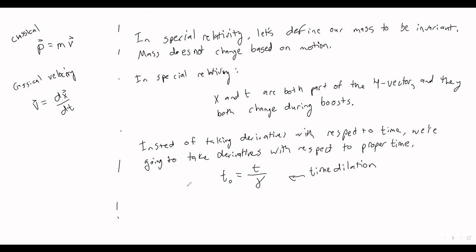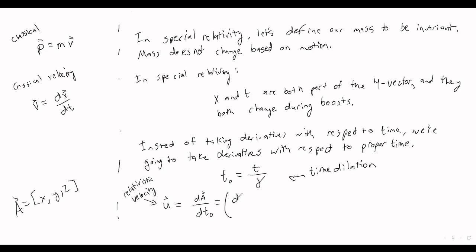I'm going to define u to be my relativistic velocity. We're taking the derivative of position vector A — which can have x, y, and z coordinates — with respect to proper time instead of regular time. Written out, this gives us the x component divided by proper time, the y component divided by proper time, and the z component divided by proper time.